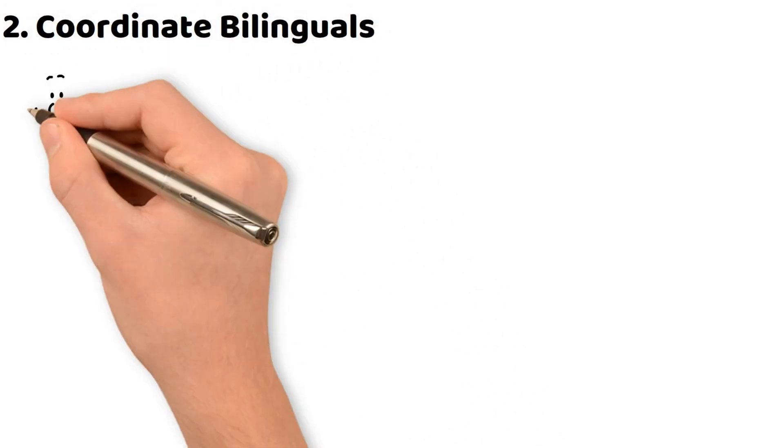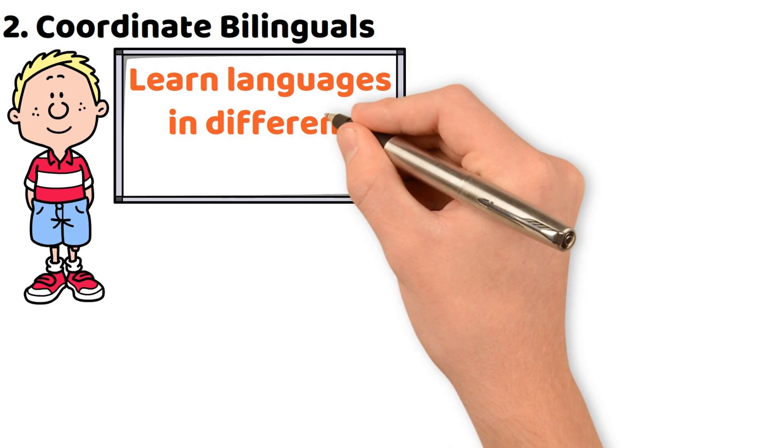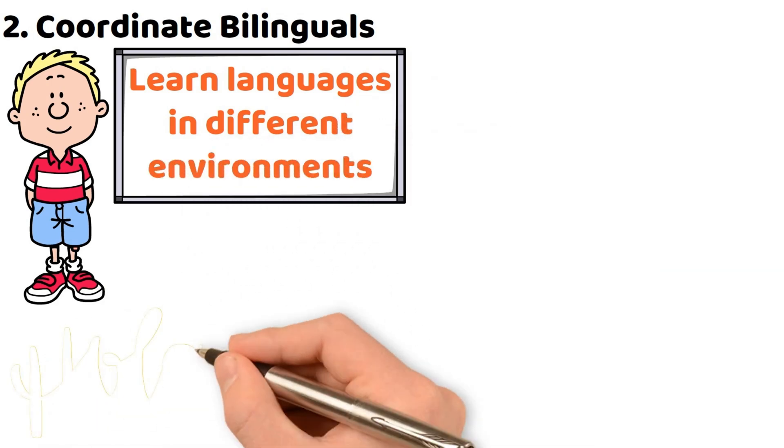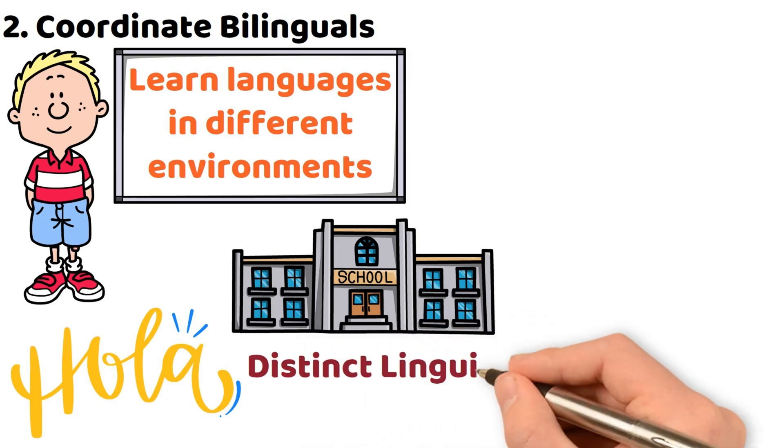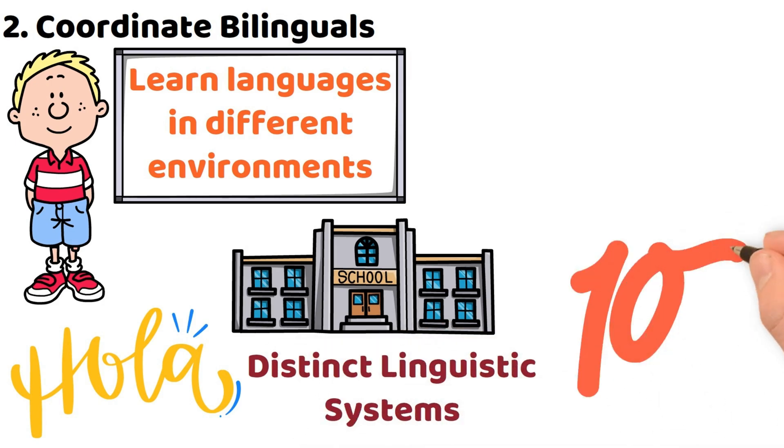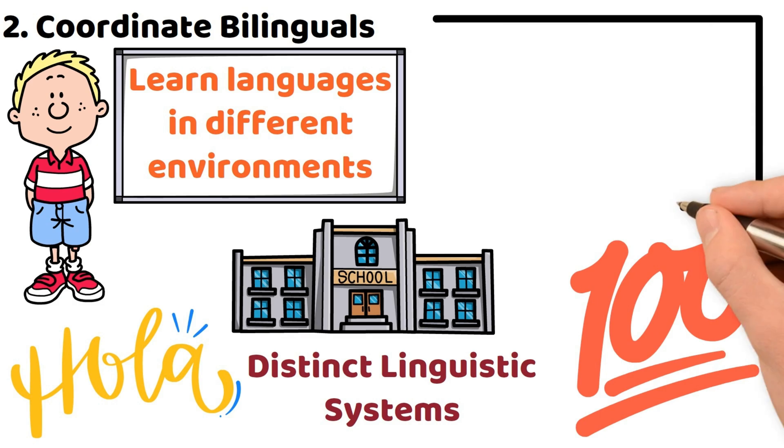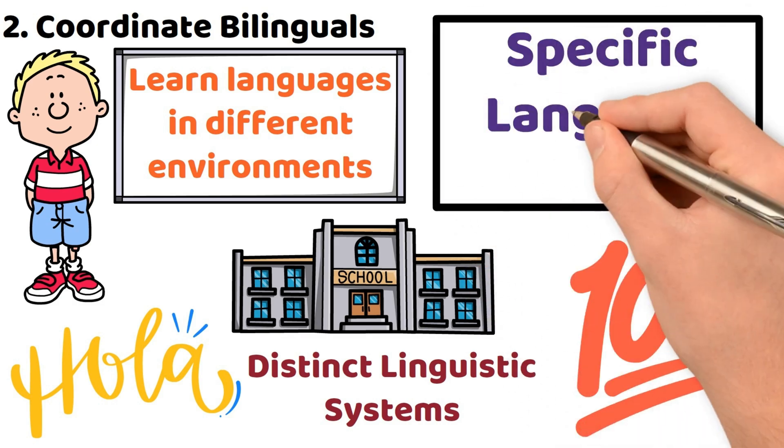Coordinate bilinguals like Gabriela's older brother learn languages in different environments. While he uses Spanish at home, he learns English at school, developing distinct linguistic systems. This allows him to adapt effectively, navigating social situations with specific language tools.